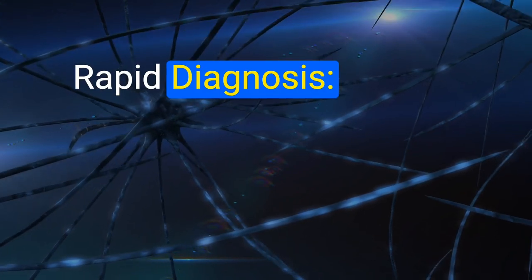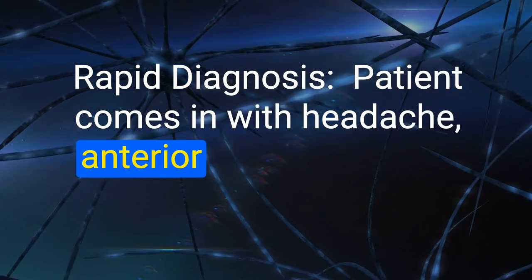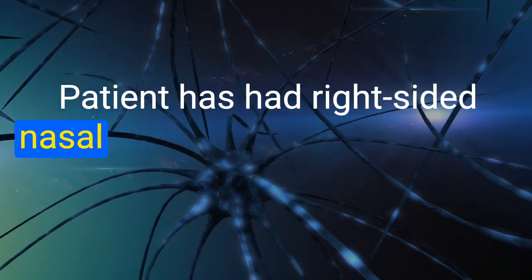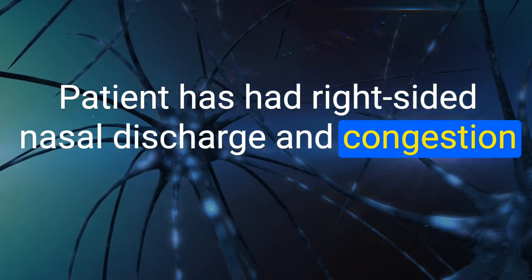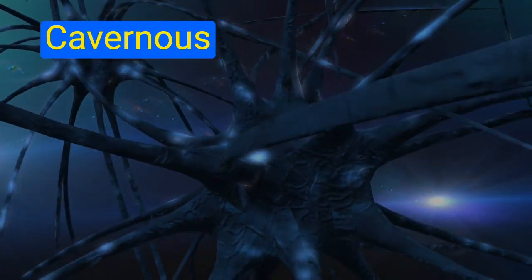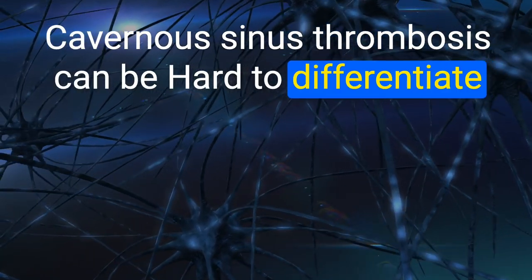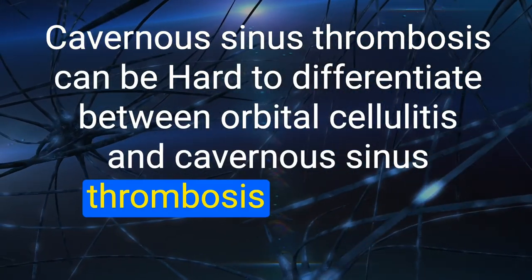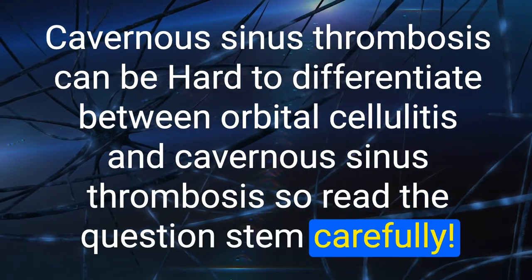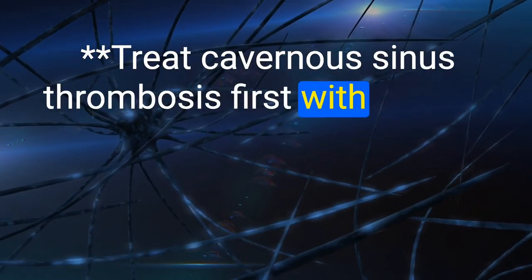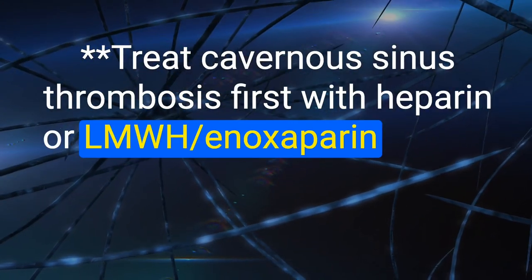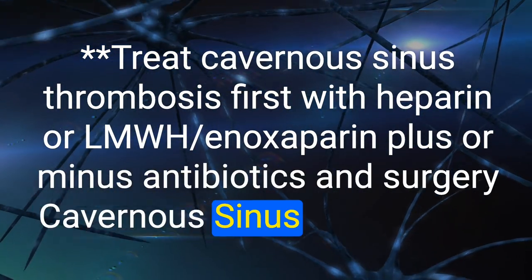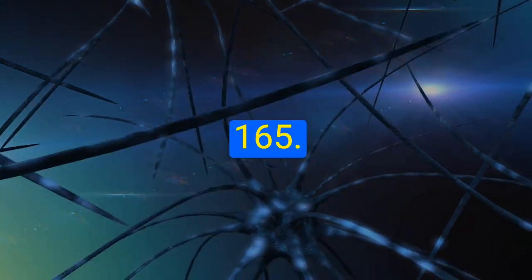164. Rapid diagnosis: patient with headache, anterior bulging left eye, limited lateral gaze, and right-sided nasal discharge/congestion — cavernous sinus thrombosis. Treatment: heparin or LMWH (enoxaparin), plus or minus antibiotics and surgery.